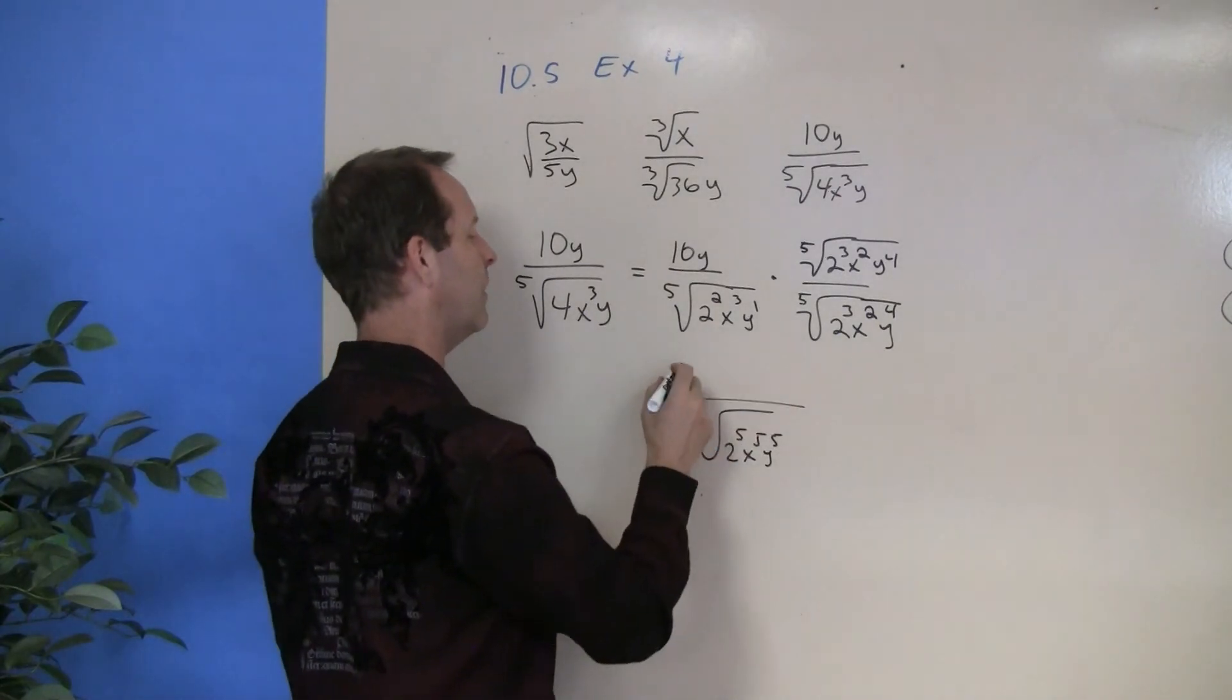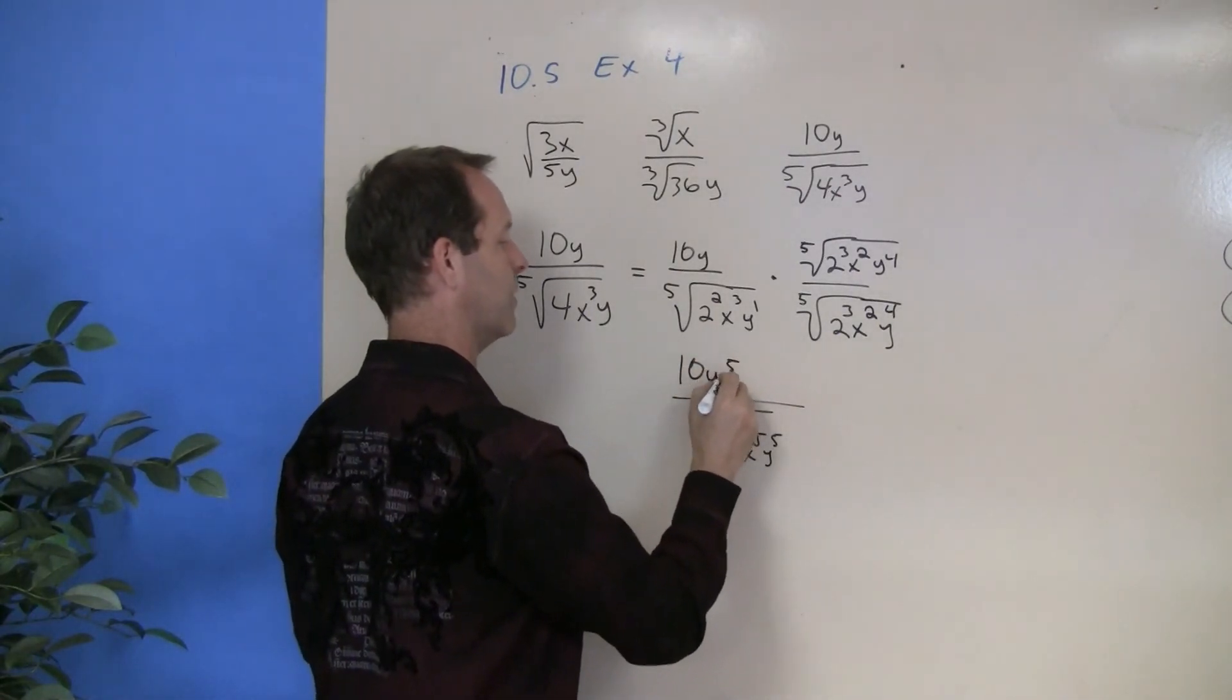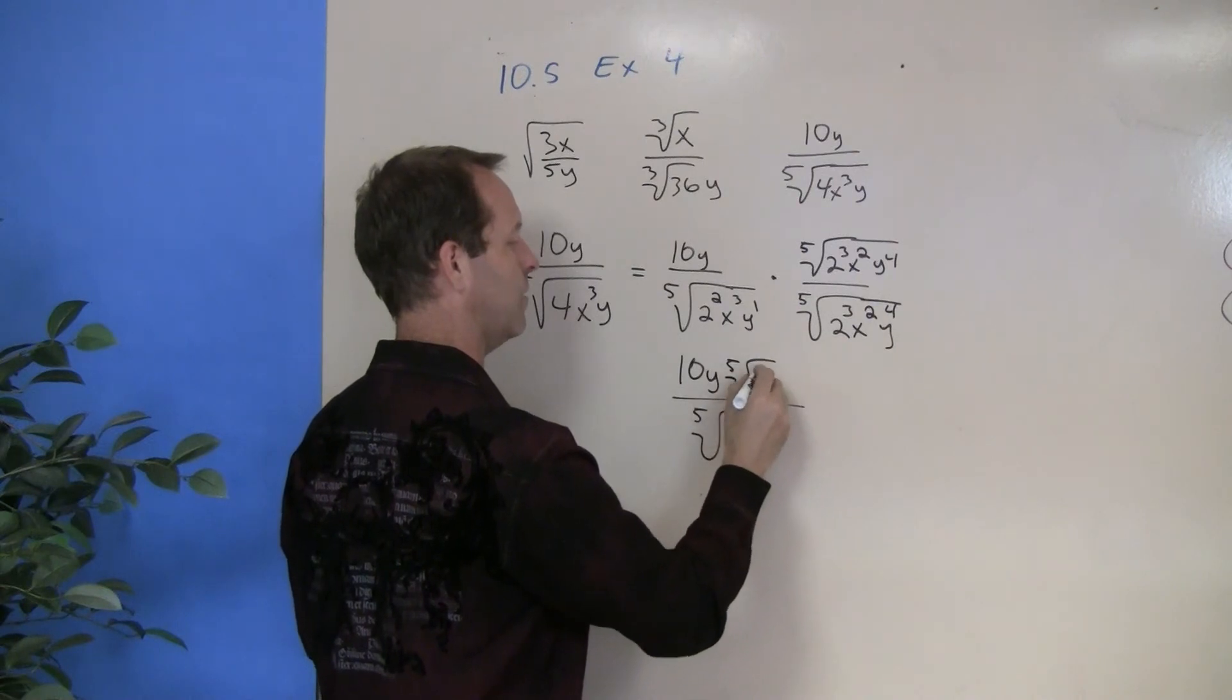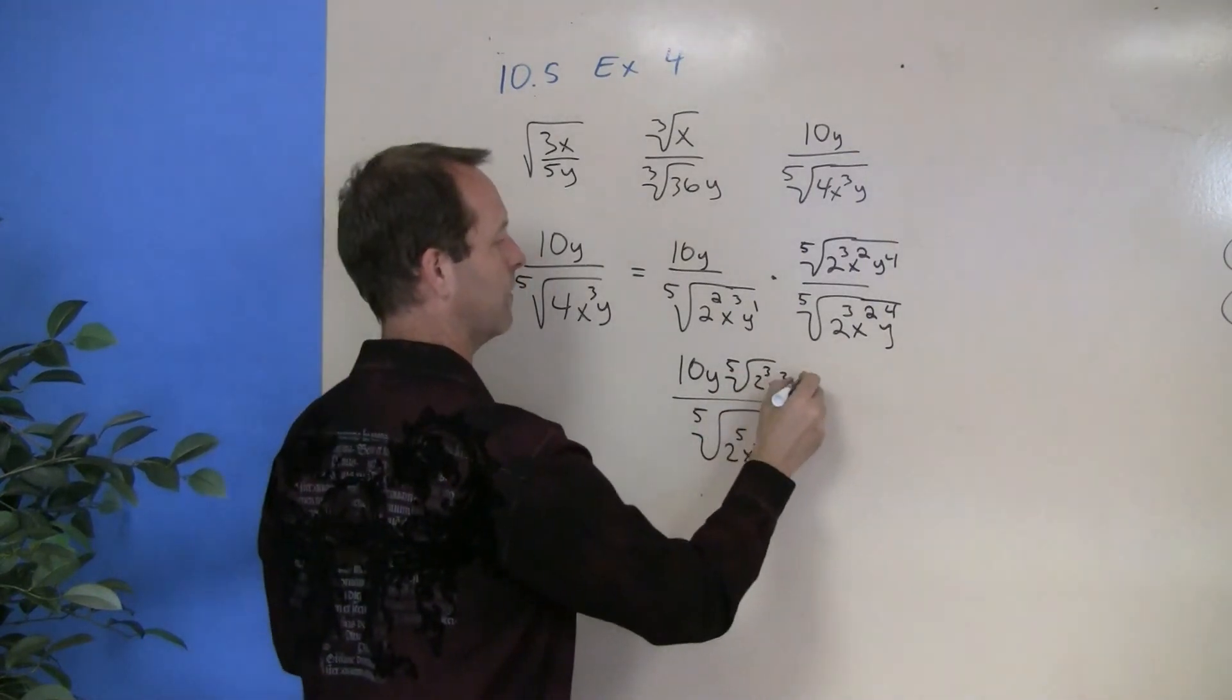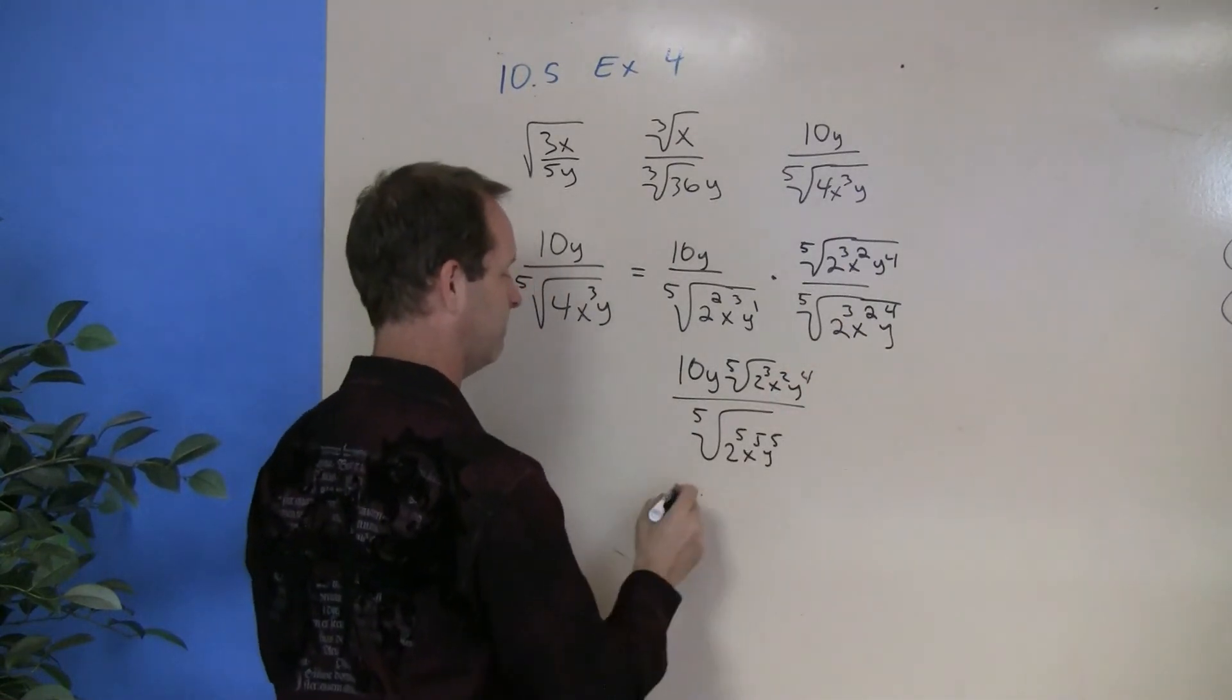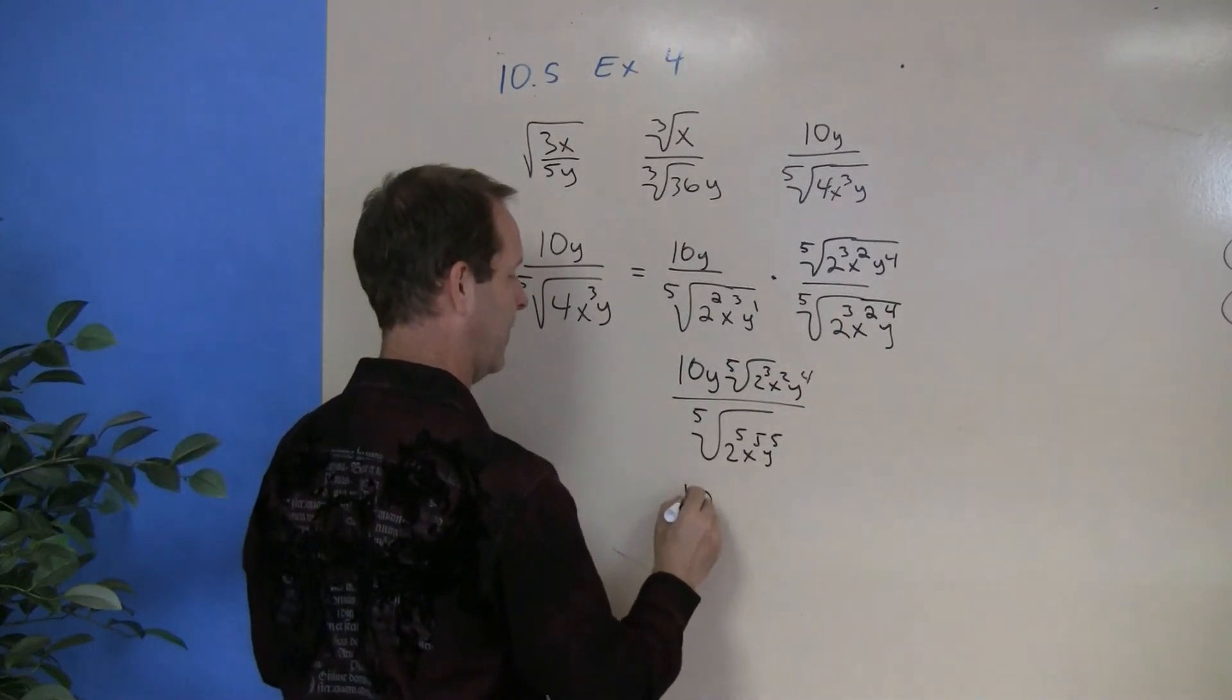And the numerator, that's just 10y to the fifth root of 2 cubed, x squared, y, y to the fourth. So let's clean that up now for my final solution. 10y fifth root of 8, 2 to the cubed, x squared, y to the fourth. And on the bottom, 2xy.